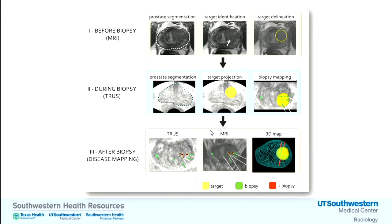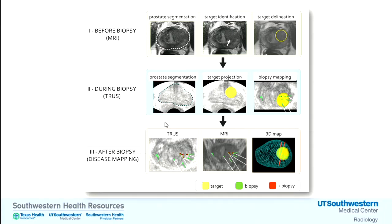This is a multi-step process. Once the patient is determined to have suspected cancer and referred for MRI, we delineate the prostate boundaries, identify a suspicious area, and mark it. On the day of the biopsy with ultrasound, the urologist delineates the prostate boundaries, and using fusion software, the MRI target is projected onto the ultrasound screen for the targeted approach. Afterward, biopsy results are integrated to confirm cancer location and to QA both the MRI and biopsy procedure.